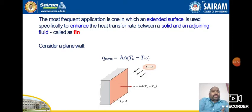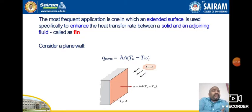The most frequent application is one in which an extended surface is used specifically to enhance the heat transfer rate between a solid and the adjoining fluid — this is called a fin. If you consider one plane wall with base surface temperature Ts, area A, and heat transfer rate Q = hA(Ts − T∞), this is Newton's law of cooling for convection.